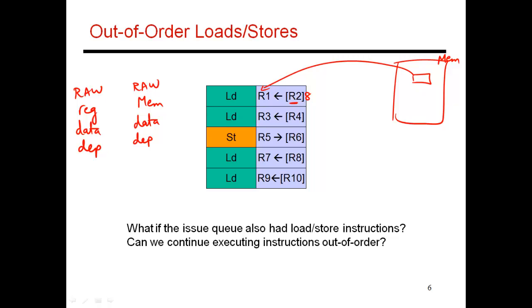In this table, I've looked at my issue queue and picked out just the loads and stores, focusing the spotlight on just those entries. I'm going to move those entries - these loads and stores - into a separate structure called the load-store queue. You can imagine it as being part of the issue queue in some sense, as it does the same things expected of the issue queue. So as registers are made available, you broadcast the availability of those registers to the load-store queue.